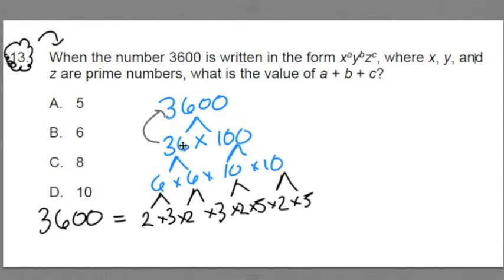The first row of 36 times 100, the second row, and the third row, they all multiply out to get to 3600. What makes this last row special, though, is that these are the prime factors.